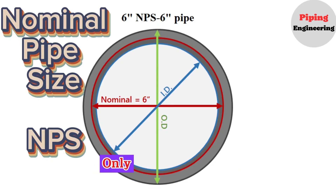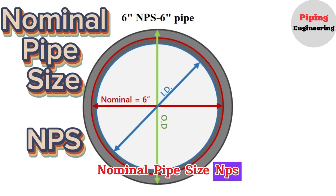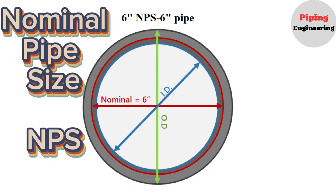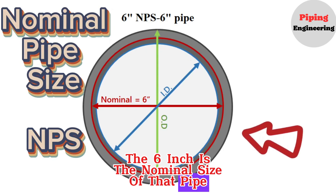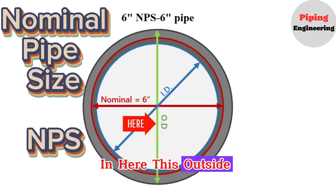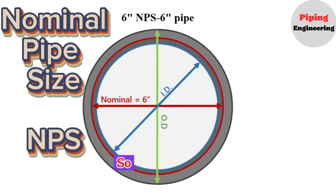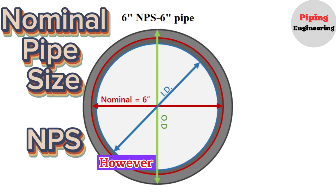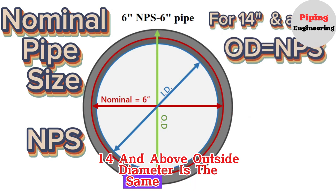Nominal pipe size only pertains to the pipe's outside diameter. NPS is the number that defines the size of the pipe. For example, this is a 6-inch pipe — when you say 6-inch pipe, the 6-inch is the nominal size of that pipe. The NPS will be somewhere in between the OD and ID of the pipe. However, for pipe sizes NPS 14 and above, the outside diameter is the same as the NPS.